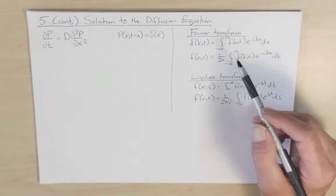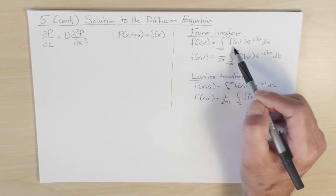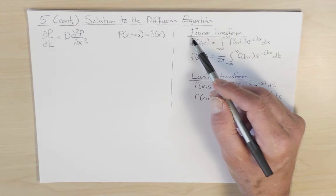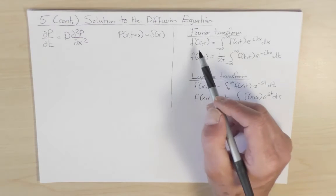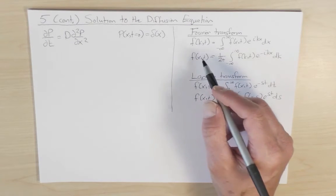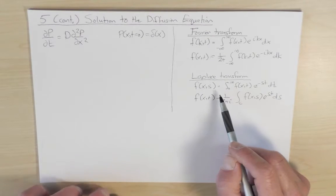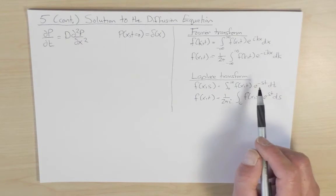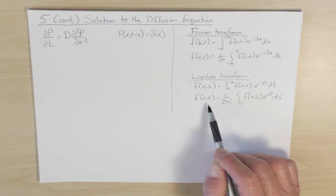An important point: the function f(k,t) is the Fourier transform — it is not the same function f with x replaced by k. In many books people write a tilde or hat over it, which I find a bit cumbersome, so I will use the same notation and rely on the argument to indicate it is the Fourier transform. Similarly, for the Laplace transform, we define f(x,s) as the integral over all time of f(x,t) e to the minus st dt.